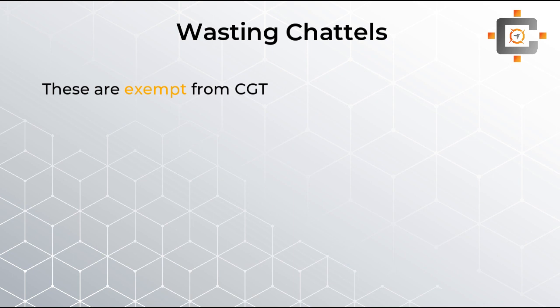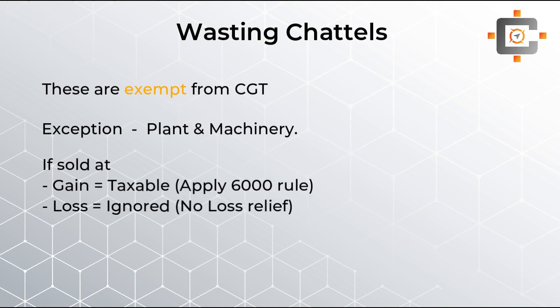Wasting chattels are generally exempt from CGT. However, there is an exception: plant and machinery used in business is taxable even if it is a wasting chattel. If plant and machinery is sold at a gain, apply the 6,000 rule. If sold at a loss, ignore it for CGT purposes, because the loss has likely already been claimed as a capital allowance in the P&L.